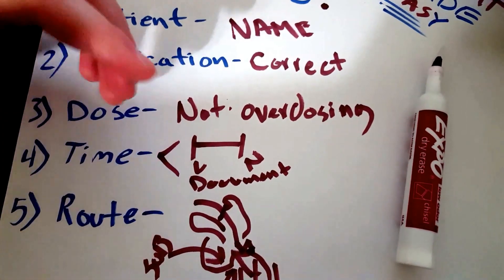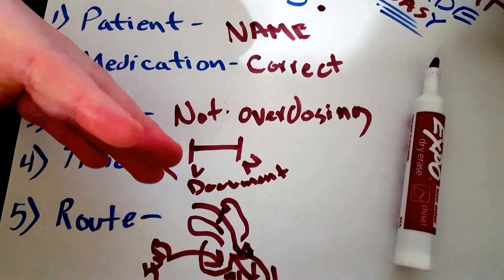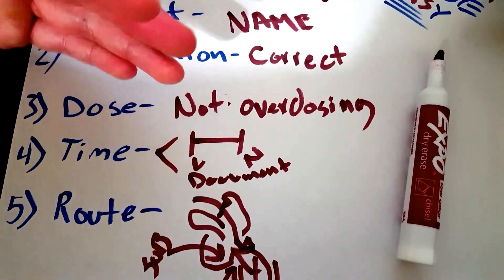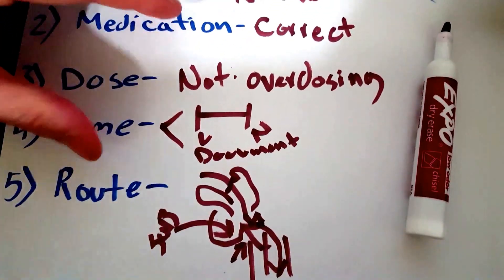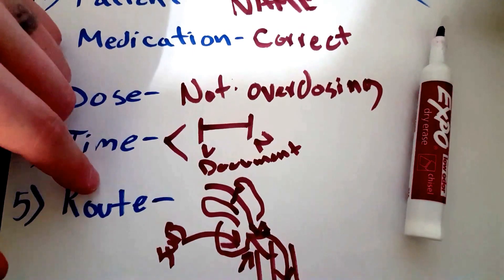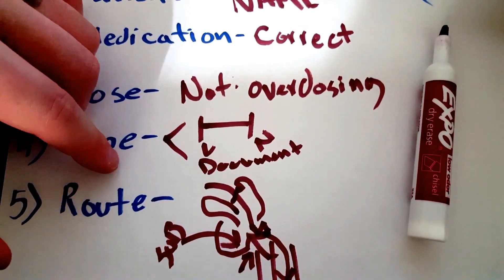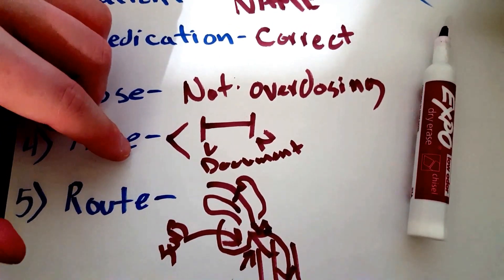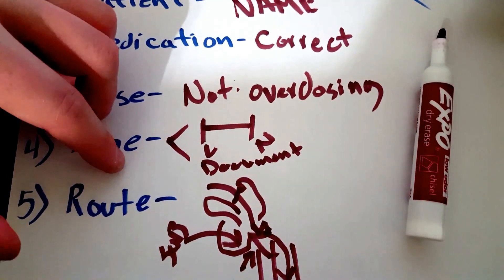That's going to help allied health, doctors, and nurses down the road to track stuff. And then the route—how is it given? Sublingually, is it inhaled like albuterol, or is it swallowed, any kind of oral pill?